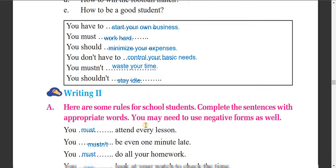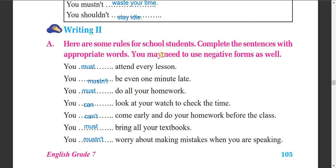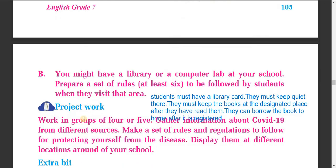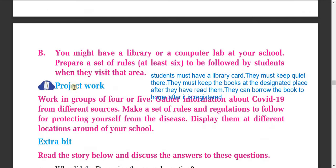Here are some rules for school students. Complete the sentences with appropriate words — you may need to use negative forms as well. You must attend every lesson. You mustn't be even one minute late. You must do all your homework. You can look at your notes to check. You can't come early and do your homework before class. You must bring all your textbooks. You mustn't worry about making mistakes when you are speaking.